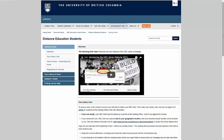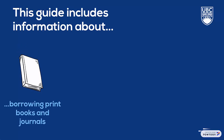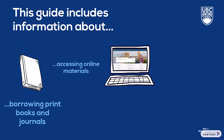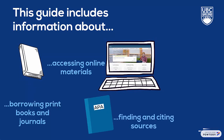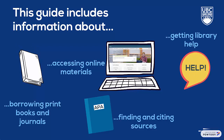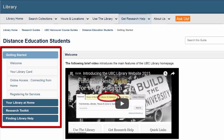If you're following along in your own web browser, be sure to bookmark this page as you'll likely need to return to it in the future. This guide includes information about borrowing the library's print books and journals, accessing online materials, finding, evaluating, and citing sources for research, and finding library help. You'll want to explore each of these sections of the guide in depth in order to understand the full extent of services available to distance students.